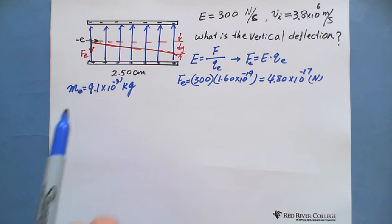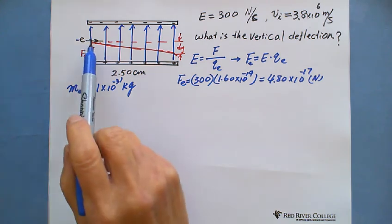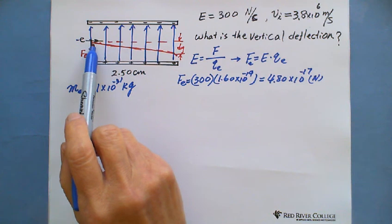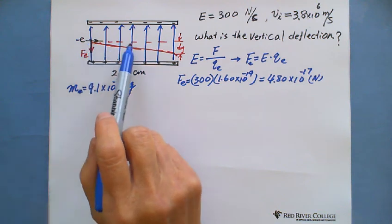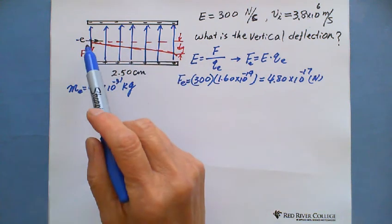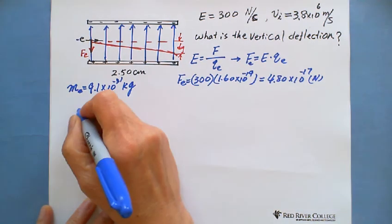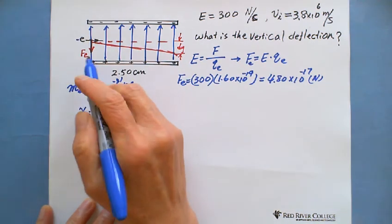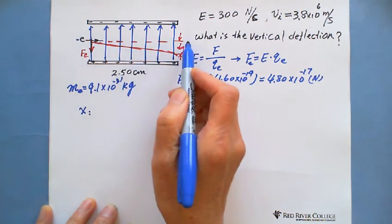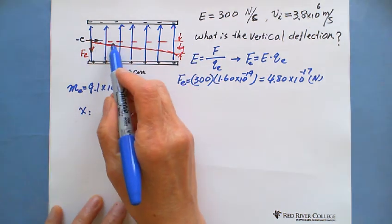For projectile motion, you think about in this case, we need to solve x direction, horizontal direction, and vertical direction. Let's say the horizontal direction is x direction. On x direction, there is no force. So it's a uniform motion.